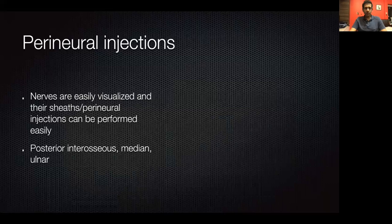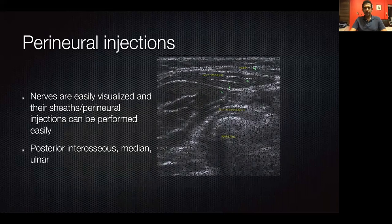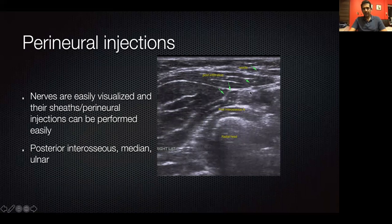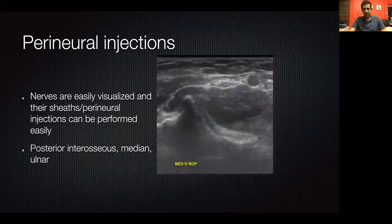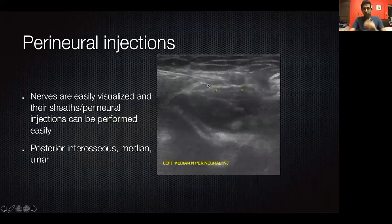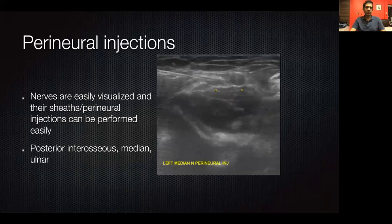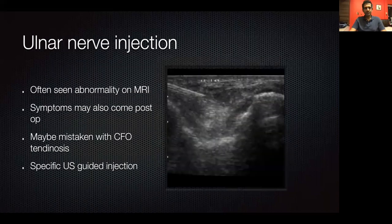We also do perineural injections — nerves are easily seen and we can inject along the perineural sheath. For example, in the elbow, here is the posterior interosseous nerve; you can see the nerve, the vessel, and the needle sitting right over the surface of the nerve — very accurate confirmation of the right spot. For these injections we use preservative-free local anesthesia and a water-soluble steroid like Pecnosol. Similarly, here's an injection along the ulnar nerve for ulnar nerve-related symptoms.